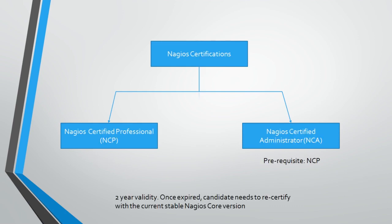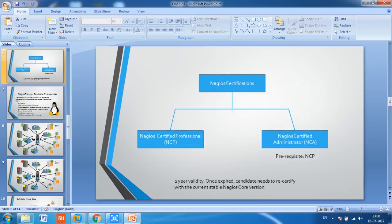Two types of Nagios certifications are available: NCP (Nagios Certified Professional) and NCA (Nagios Certified Administrator). There are no prerequisites to certify as NCP, but passing NCP is recommended before pursuing NCA. Both certifications have a validity period; once expired, the candidate needs to recertify based on the current stable Nagios Core version — not Nagios XI.